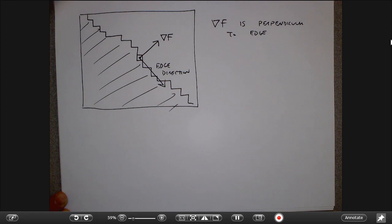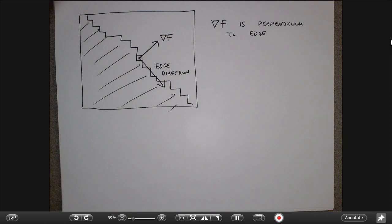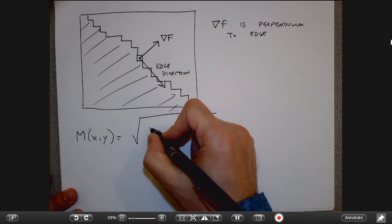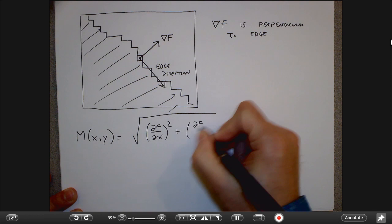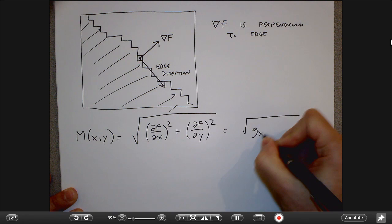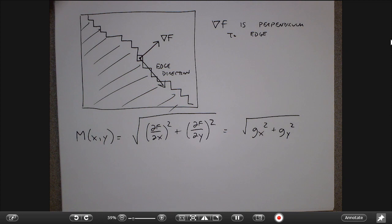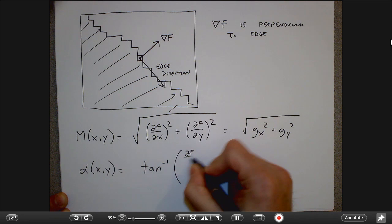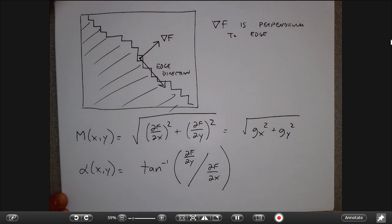We often want the magnitude of the first derivative, which is the length of the gradient vector. The angle of the gradient, which I'll call alpha, is the inverse tangent (arctangent) of the gradient components. This angle tells us something about the orientation of the edge.